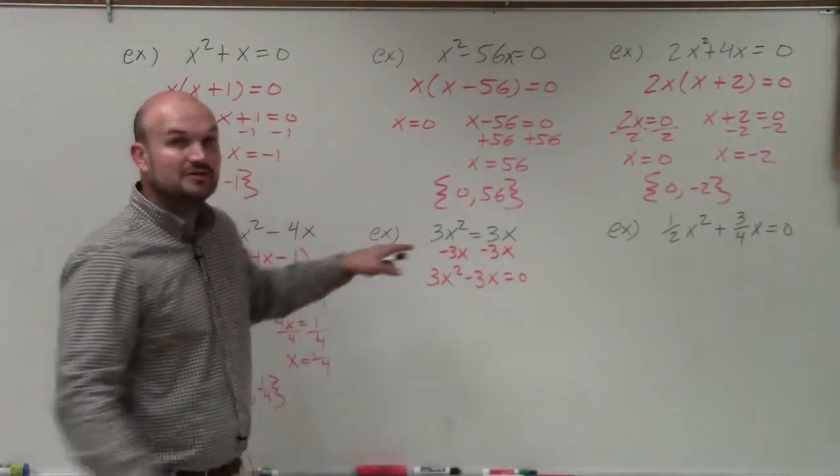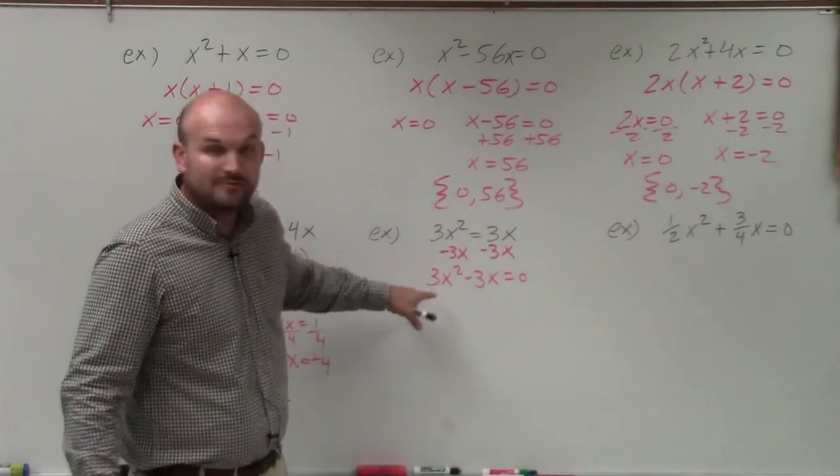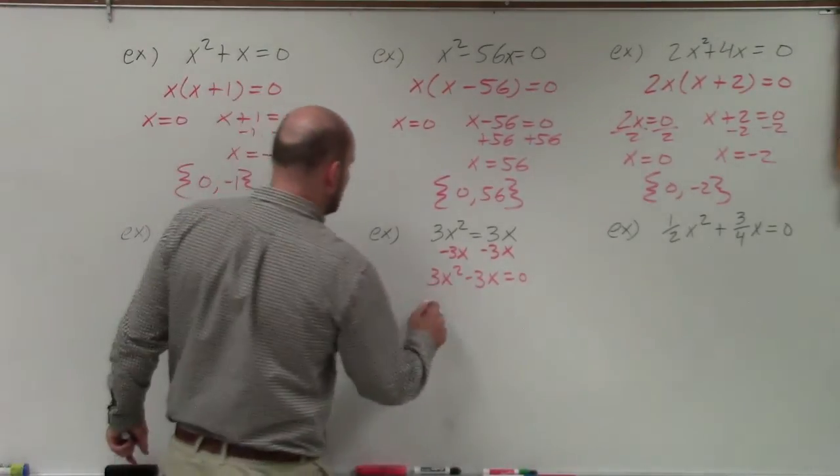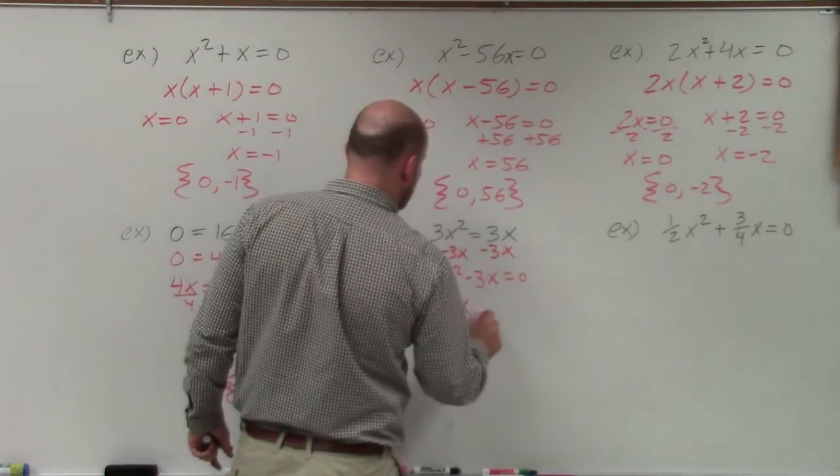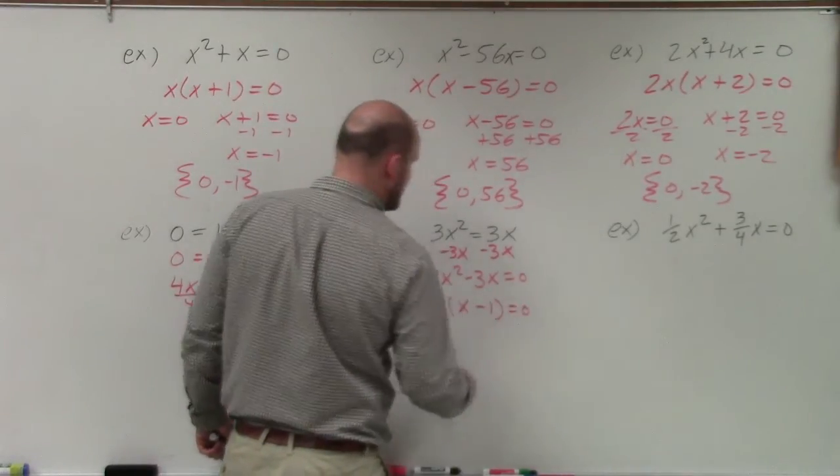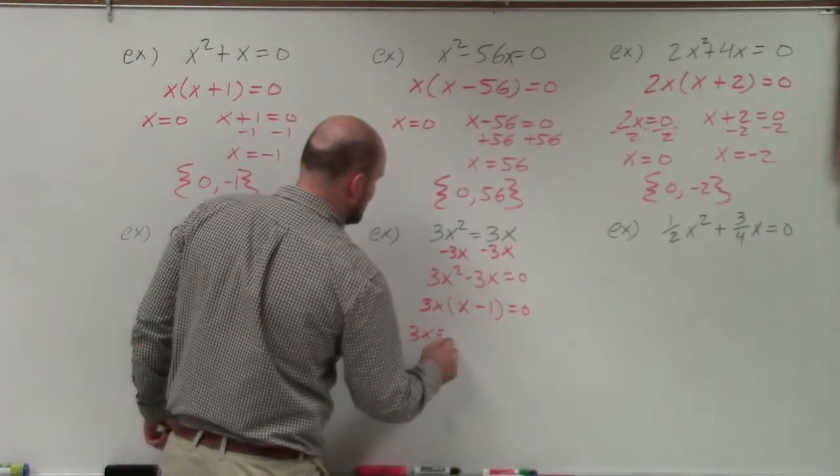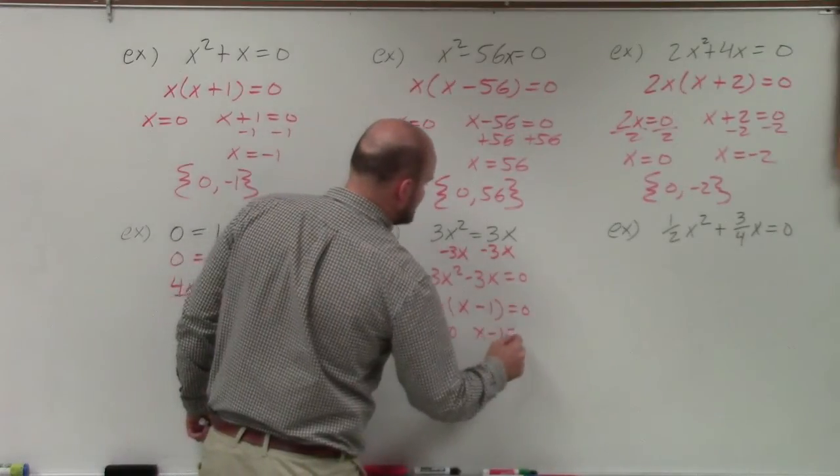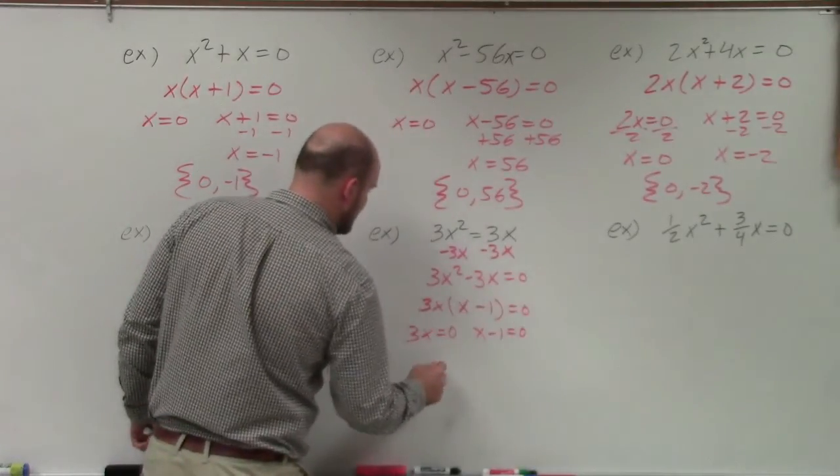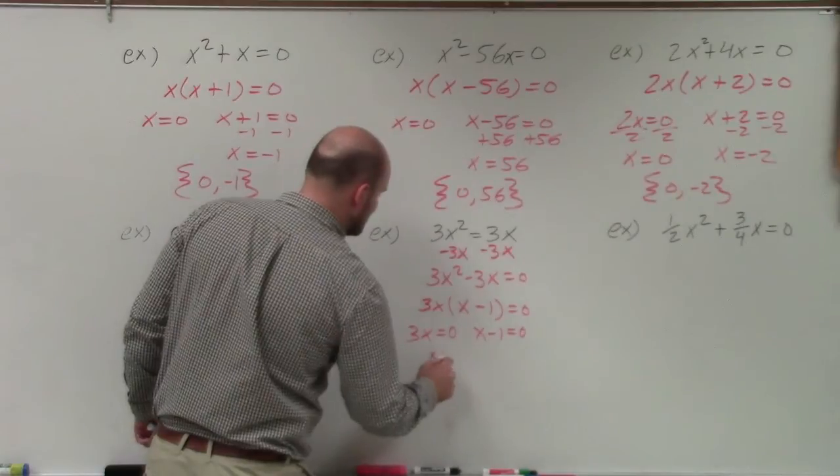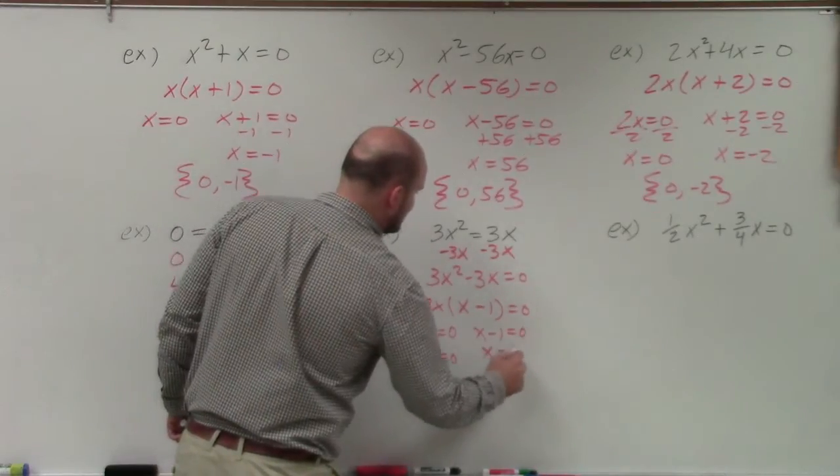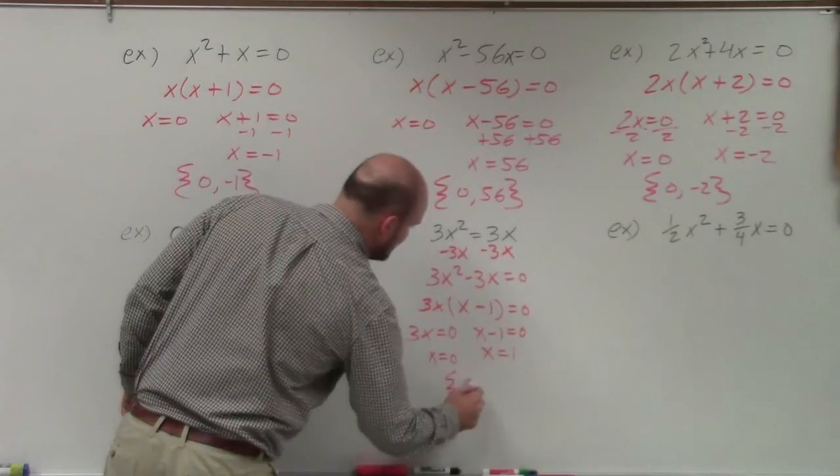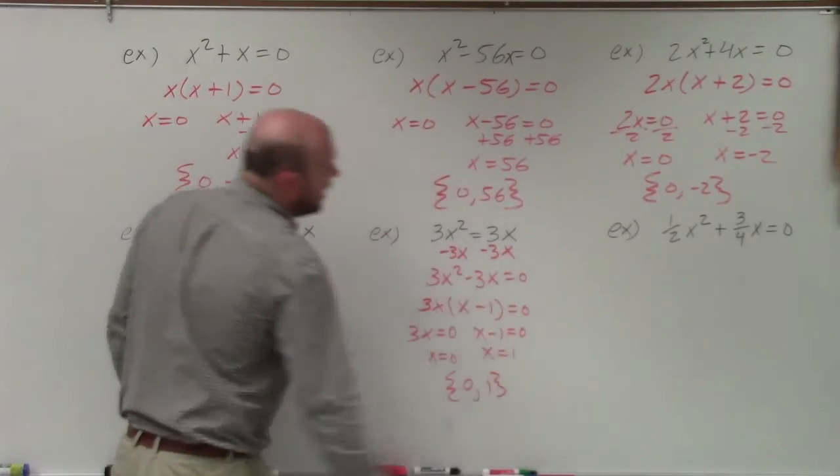Now I can factor. You notice that they both share a 3x. So I'm going to divide out of 3x or factor out of 3x. That's going to leave me with x minus 1 equals 0. Set them both equal to 0. 3x equals 0, and x minus 1 equals 0. Go ahead and solve, and I get x equals 0 and x equals 1.